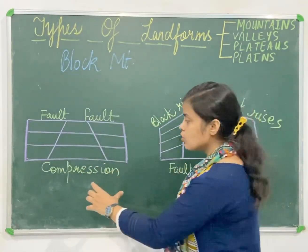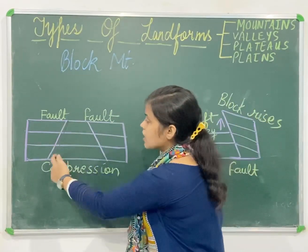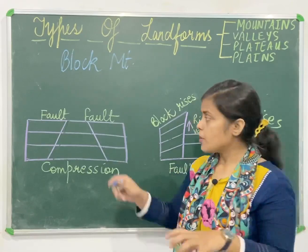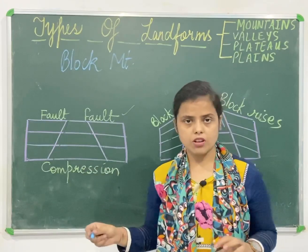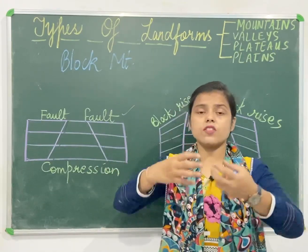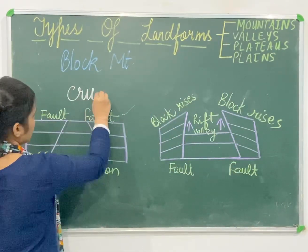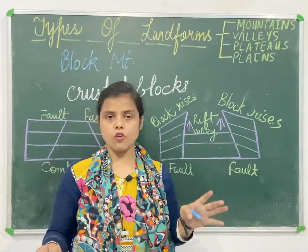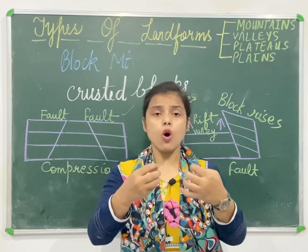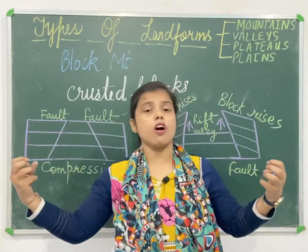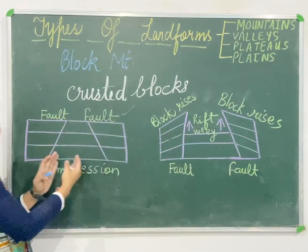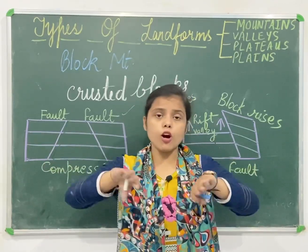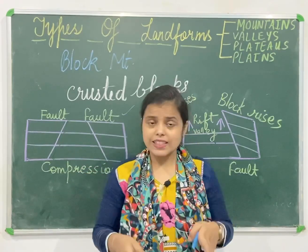Suppose this is the land we have. Due to forces of compression or tensional forces, a fault will occur. These lines are fault lines — fault lines which occur on the earth's crust. Because of these fault lines formed due to compression or tensional forces, crustal blocks will be formed, as you can see in the diagram. These tensional forces cause the crustal blocks to be pulled away from each other. Before, they were together as a part of land; now they have been pulled away from each other.